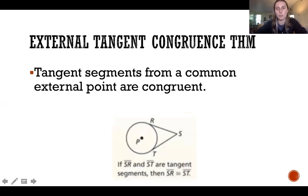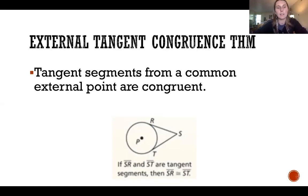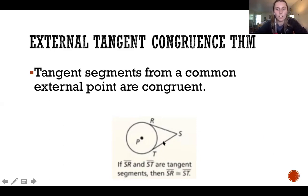The second theorem is the External Tangent Congruence Theorem: tangent segments from a common external point are congruent. We've got point S here, and these are tangent segments that connect to the circle. So from this point to the tangent, RS and ST are congruent — those measures are going to be equal. So tangent segments from a common external point are congruent.